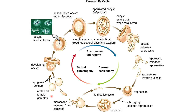You can have the microgamete, which is the male, or the macrogamete, which is the female. When they're undergoing sexual reproduction, that's referred to as gametogony. These male and female gametocytes will then merge and fertilize one another to form another oocyst, and then unsporulated oocysts are shed in the feces.